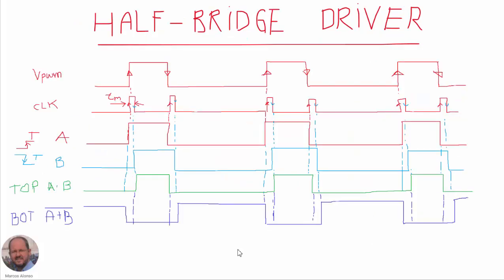This is the time diagram of how we are going to do this. We have here the PWM signal at the input of our driver. From this signal, paying attention to the edges of these signals, what we are going to do is generate a CLK with two pulses. One of the pulses is going to be generated from the positive edge of the PWM signal, and the other pulse from the negative edge of the PWM signal. These pulses are going to have a time duration equal to the dead time that we want to implement, and we are going to generate these pulses using a one-shot flip-flop.